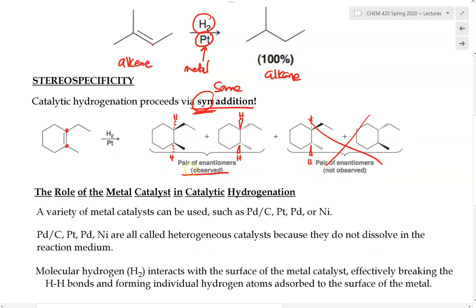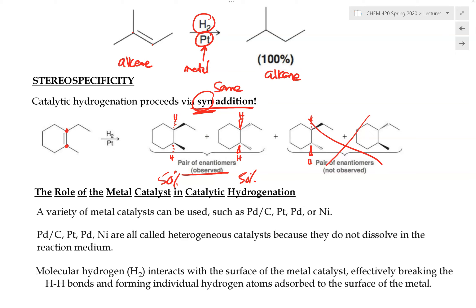Both enantiomers get produced, and most of the time it is a racemic mixture — 50% of one and 50% of the other enantiomer. Producing a racemic mixture is not really desirable because we lose 50% of the enantiomer we want. Therefore, there has been a lot of research to figure out a way to favor one enantiomer over the other, and we will discuss some of those methods shortly.